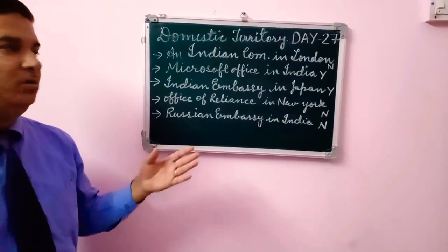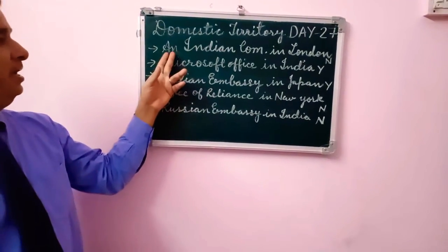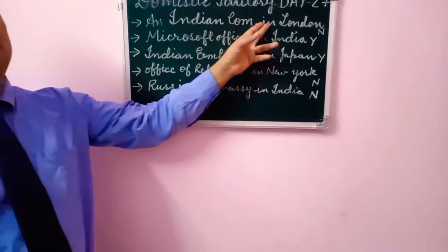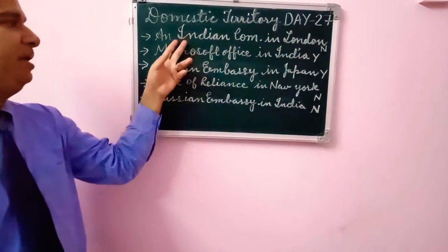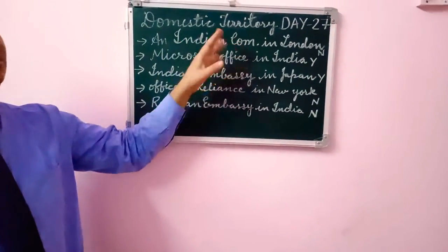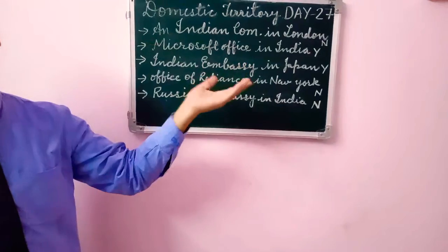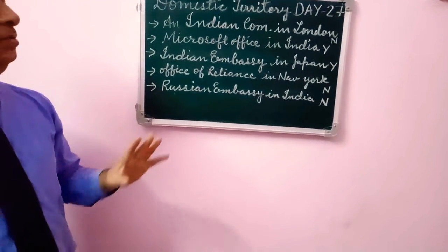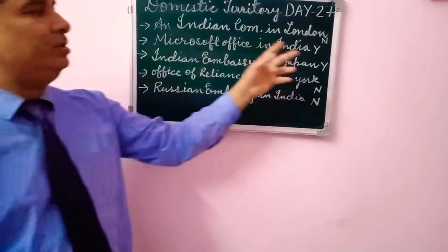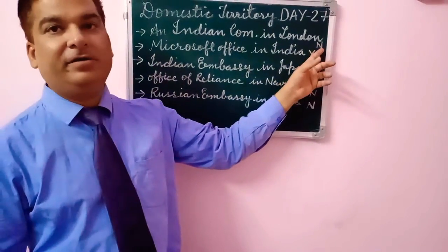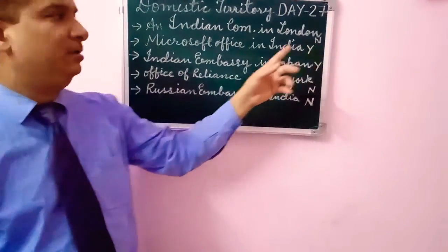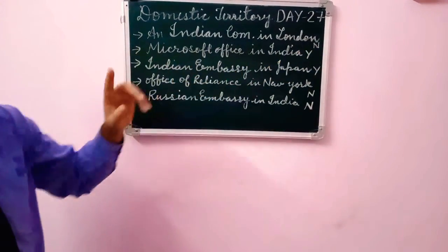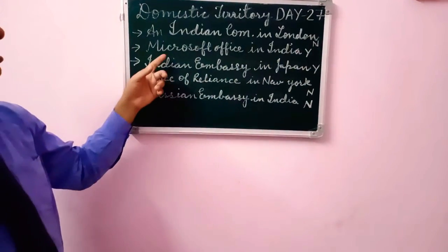Example one: An Indian company in London. The name is Indian, but it is located in London. So it is not part of the Domestic Territory of India. We write: not the Domestic Territory of India.